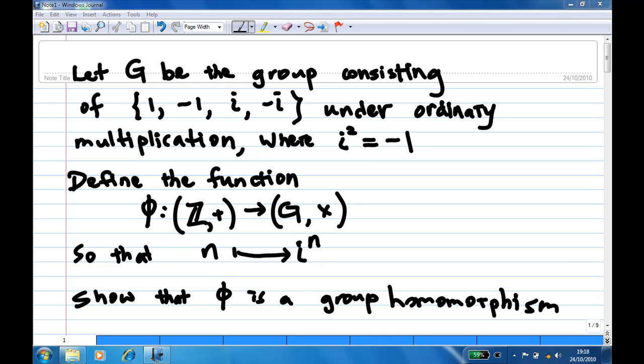In this case, we are given a group G consisting of {1, -1, i, -i} under ordinary multiplication, where i squared equals -1, that is, i is an imaginary complex number.